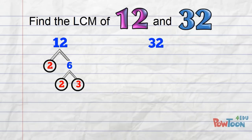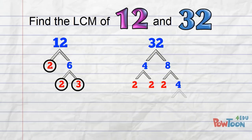32: 4 times 8 is 32. 4 is from 2 times 2. 8 is from 2 times 4, and 4 is from 2 times 2. Circle the primes.